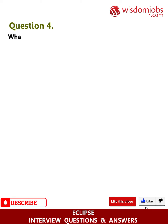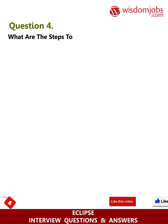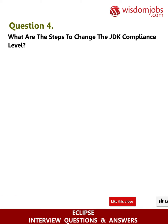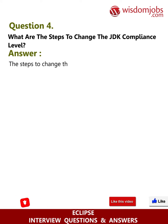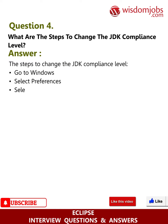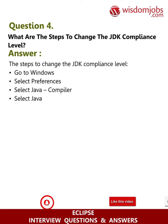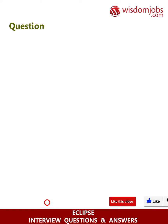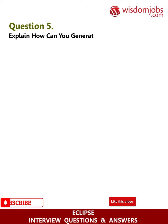Question 4: What are the steps to change the JDK compliance level? Answer: The steps to change the JDK compliance level — go to Windows, select Preferences, select Java, select Compiler, then select the Java compliance level.